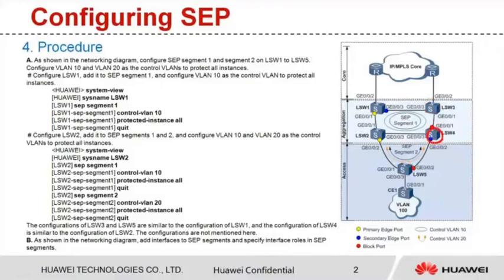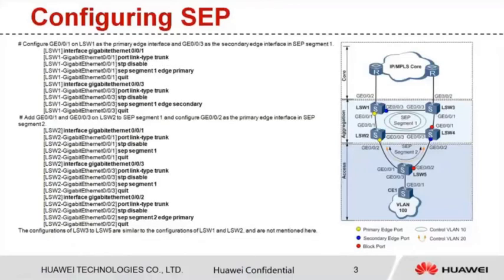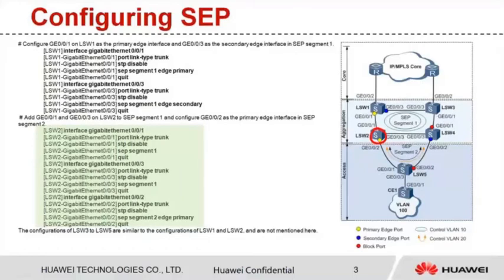The configuration of LSW4 is similar to the configuration of LSW2. Step B, as shown in the networking diagram, add the interface to the SEP segment and specify the interface role in the SEP segment. Configure GE001 on LSW1 as the primary edge interface in SEP segment 1 and GE003 as the secondary edge interface in SEP segment 1. Configure LSW2: add GE001 and GE003 to SEP segment 1 and configure GE002 as the primary edge interface in SEP segment 2. The configurations of LSW3 to LSW5 are similar to the configurations of LSW1 and LSW2.